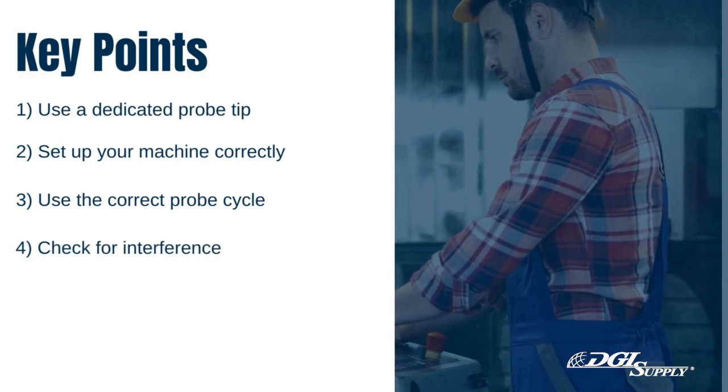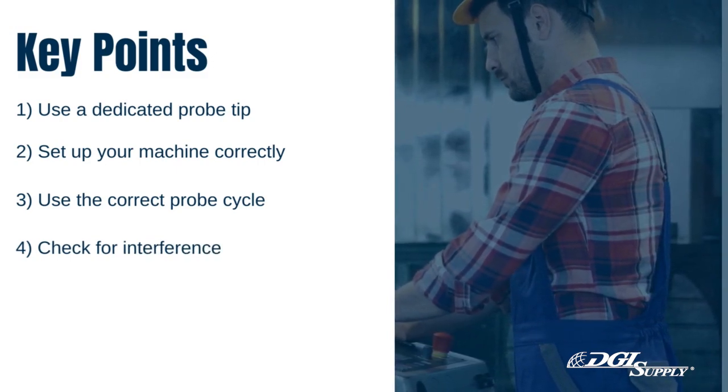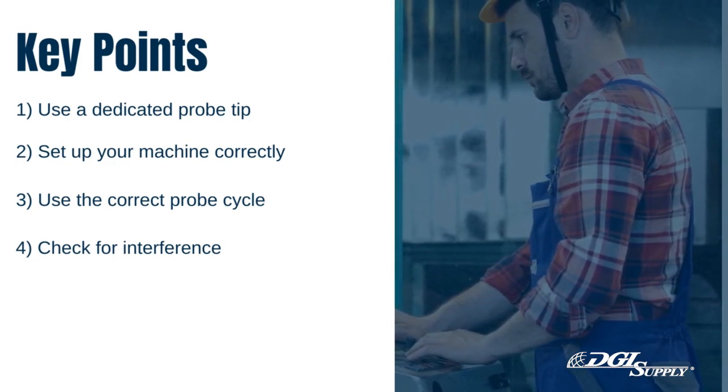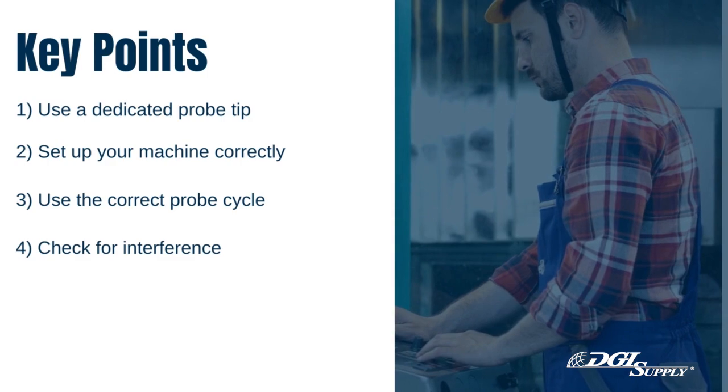Number 4: Check for interference. Before starting a probe cycle, check for any potential interference points, such as clamps or fixtures, that may get in the way of the probe.